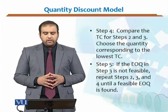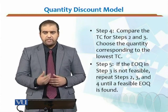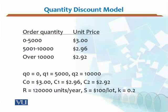Now let's look at an example. The menu of quantities is: order quantity 0–5,000 units at $3.00 per unit; 5,001–10,000 units at $2.96 per unit; and above 10,000 units at $2.92 per unit. Annual demand is 12,000 units per year, setup cost is $100 per order, and the holding cost factor is 20% of the unit cost.